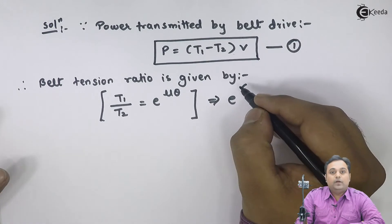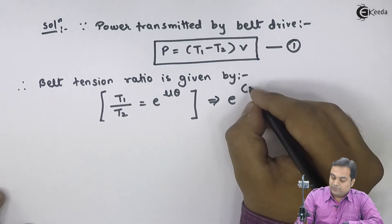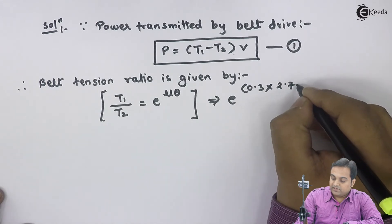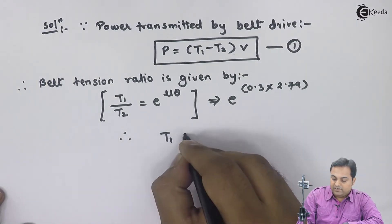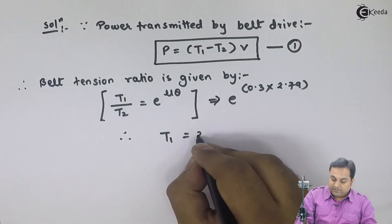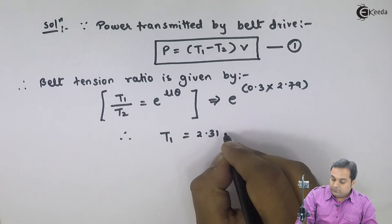So it is equal to e raised to mu, it is given as 0.3, theta is 2.79. From this I will get T1 equals 2.31 times T2.